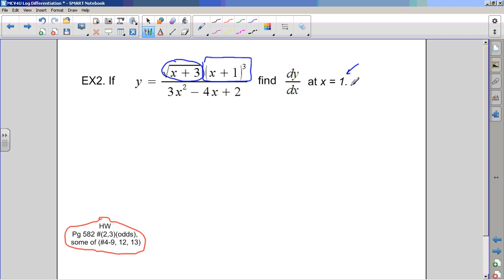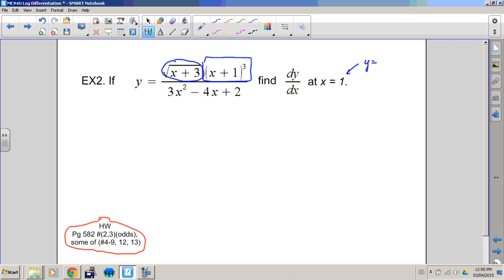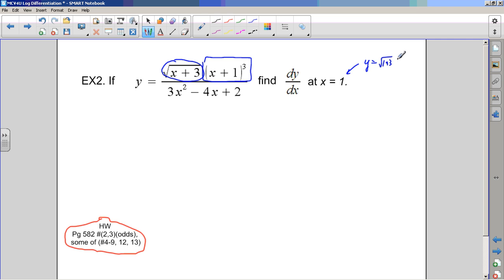Since we want the slope of this function at x equals 1, we can substitute x equals 1 at any point once we've taken the derivative. Before I forget, I'm going to calculate the y value so I can substitute it in later. That's 1 plus 3 times 1 plus 1 to the exponent 3 all over bada bing, bada boom, 4. So that's 2 times 8 over 1, that's 16. When x is 1, y is positive 16.